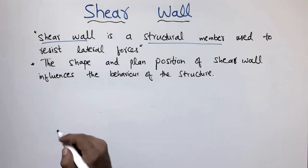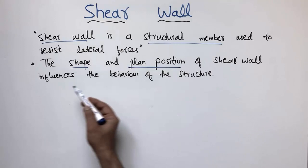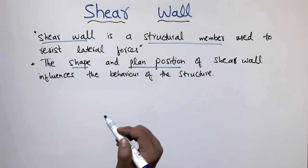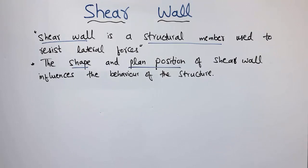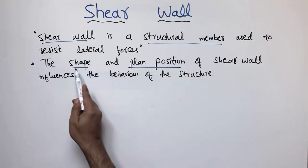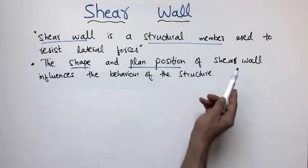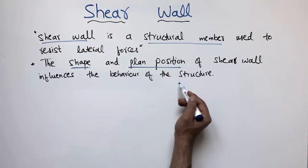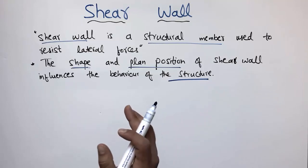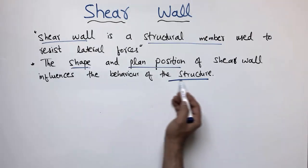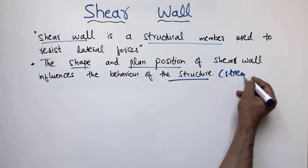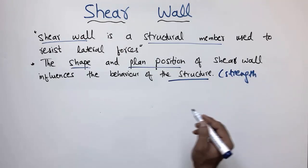One important point about the shear wall is that the shape and plan position of the shear wall influences the behavior of the structure. We should provide the right geometry and the right position of the shear wall in our structure. Mostly, shear walls are provided in the center of the building because they provide high lateral resistance. Research has found that if you provide the shear wall in the wrong place, it will not help to increase the stiffness of the building.